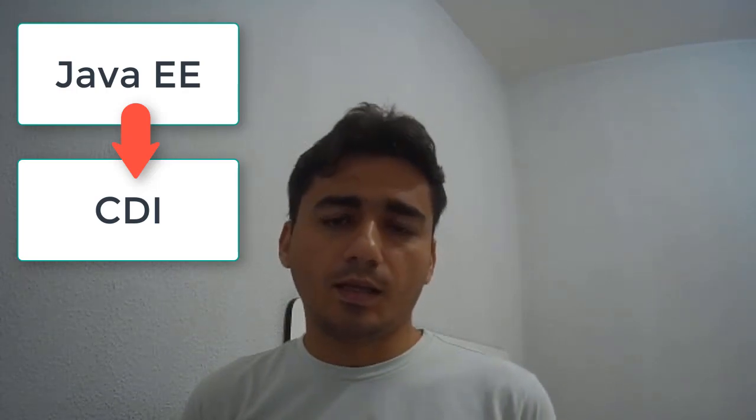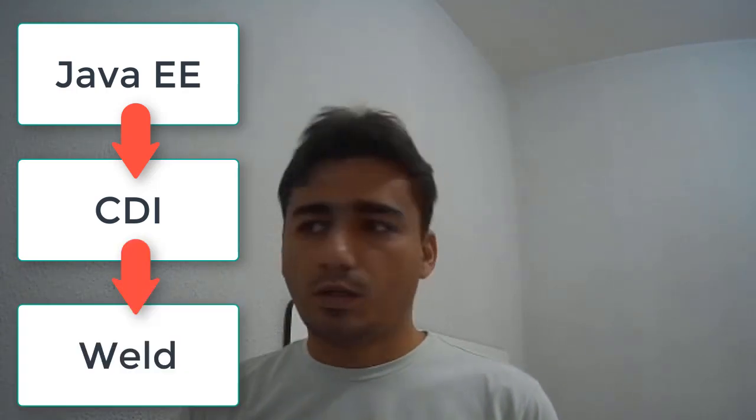CDI is a Java EE specification and there are many implementations of CDI. In this video we're going to use Weld. I've already made a video showing how to create a Hibernate environment using Eclipse IDE, and in this video we're going to use a project I created in that previous video to set up the CDI environment.